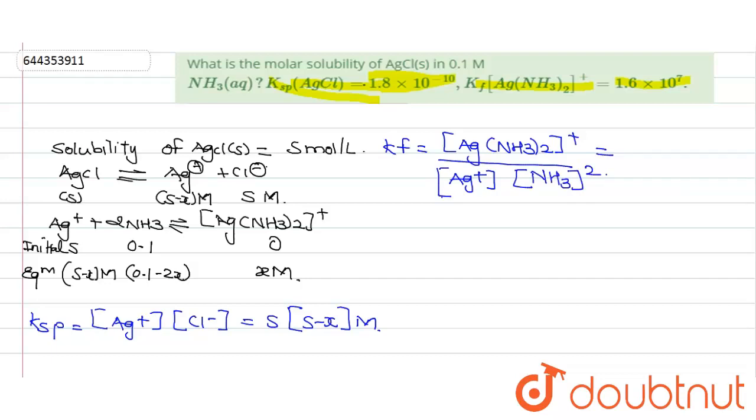Now I will substitute the value, it is X divided by (S minus X) times (0.1 minus 2X) squared.